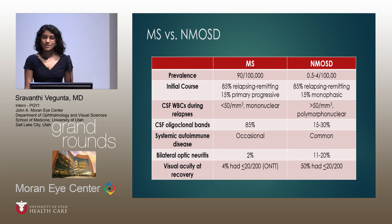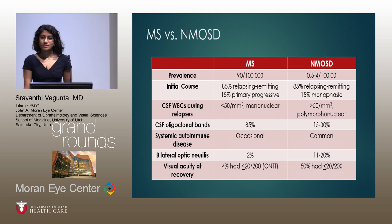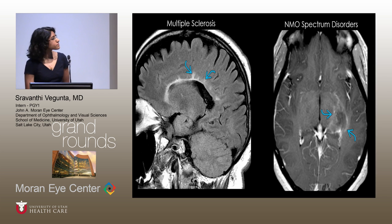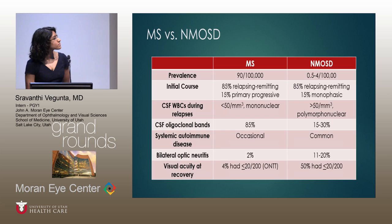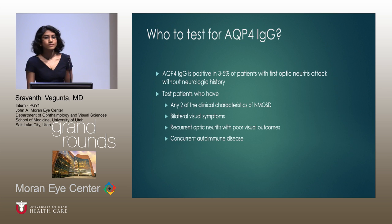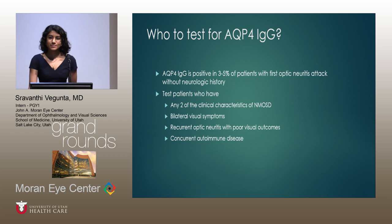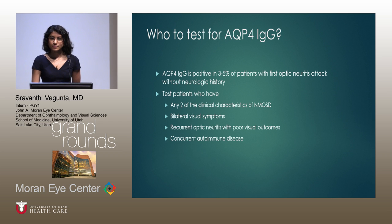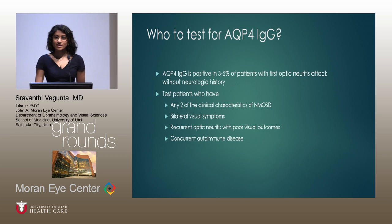I hope so too. I wanted to make a final comment — you mentioned suspecting NMO in certain situations. Certain ethnic groups are more likely to have NMO compared to Caucasians. In Southeast Asia particularly, they have way more NMO than we see here. African-Americans, Afro-Brazilians, and Caribbean populations also have a higher prevalence. That's another key factor to consider.